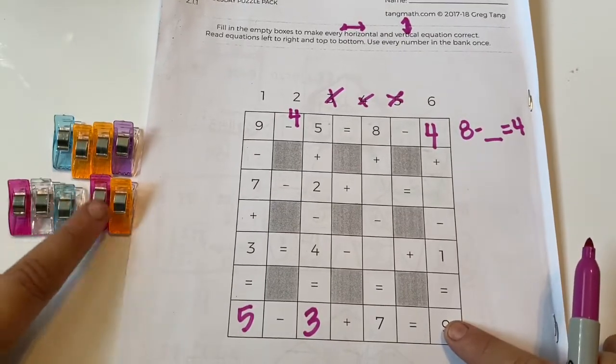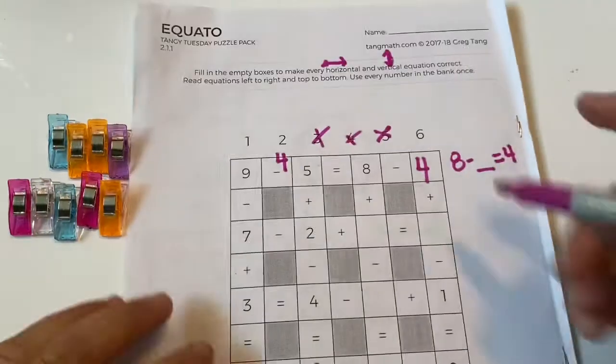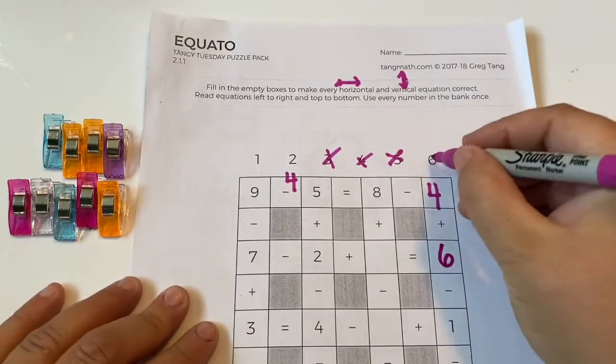So let's try our last number. Four plus six minus one equals nine. Let's count. One, two, three, four, five, six, seven, eight, nine. Yep, that's correct. So our answer is six here.